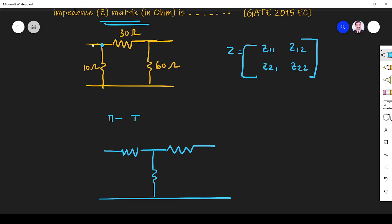First, how can I find this? On this side, I have to find this. Multiply these two: 10 into 30, divided by total resistance 100.